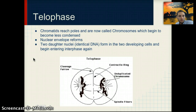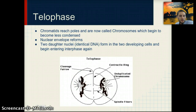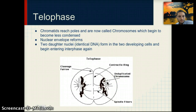In telophase, the chromatids have reached the poles and are now chromosomes, which begin to become less condensed. A nuclear envelope starts to form around the DNA and we begin to have two daughter nuclei with identical DNA. The cell then begins to enter cytokinesis and eventually interphase.